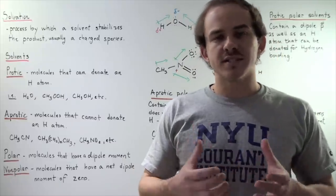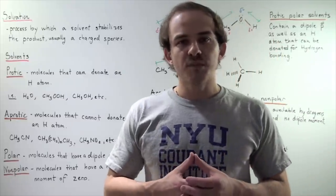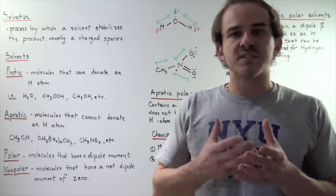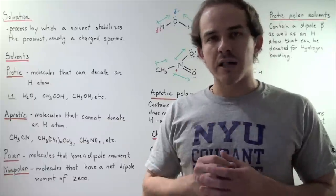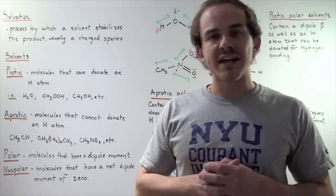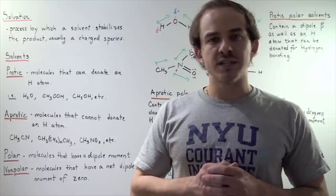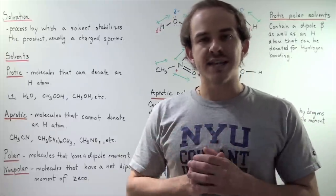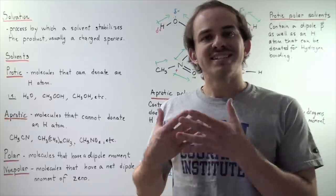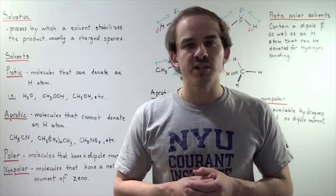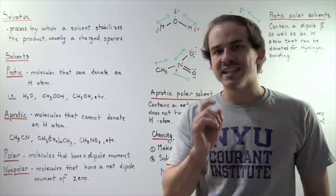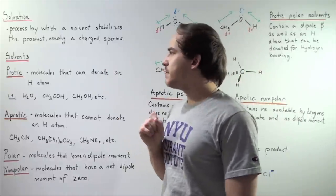In this lecture, we're going to discuss the process of solvation, and we're going to look at the different types of molecules, solvent molecules, that exist in organic chemistry. So let's begin by defining what solvation is. Solvation is the process by which a solvent molecule stabilizes a product molecule, which is usually, but not always, a charged species.